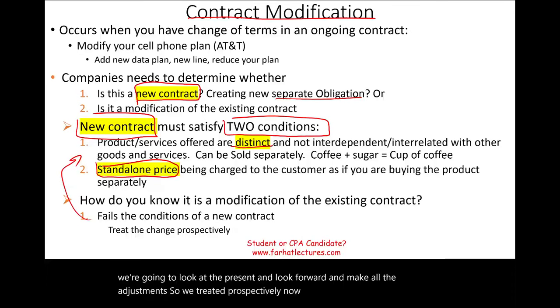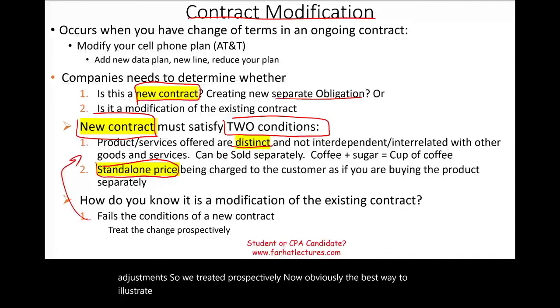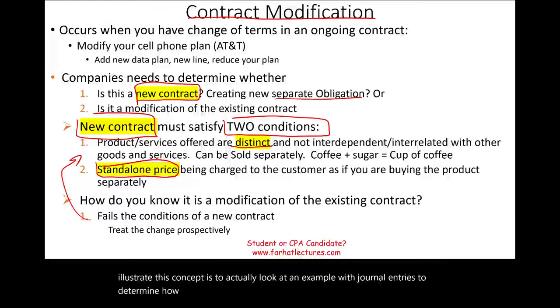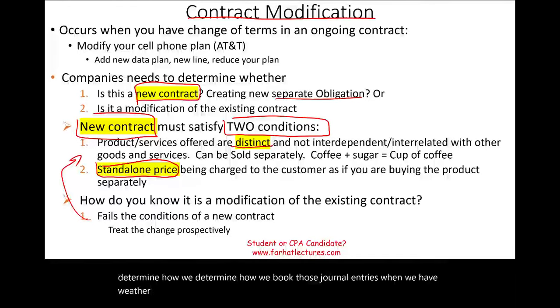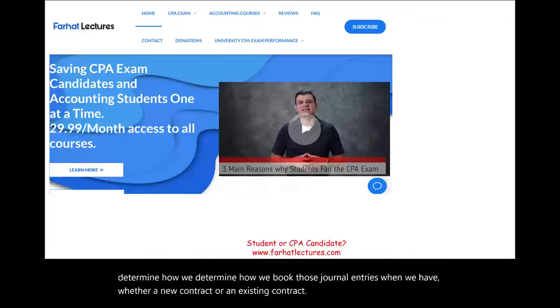The best way to illustrate this concept is to look at an example with journal entries to determine how we book those entries when we have either a new contract or a modification of an existing contract.